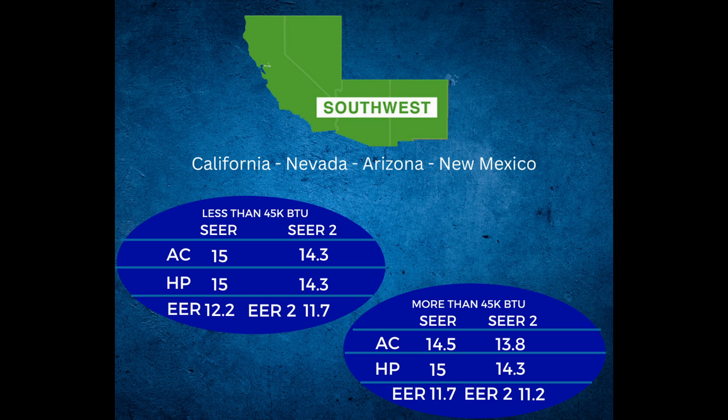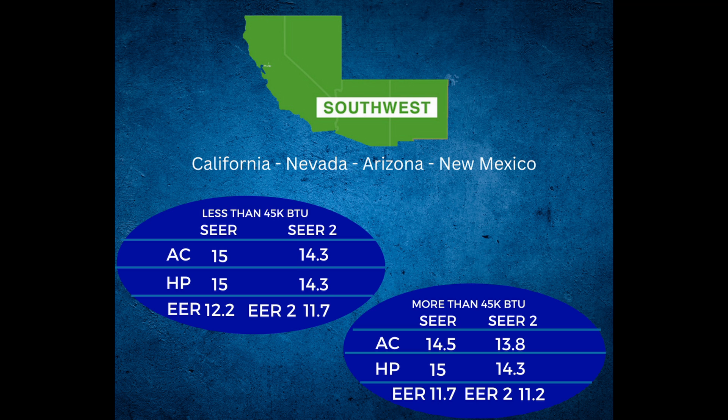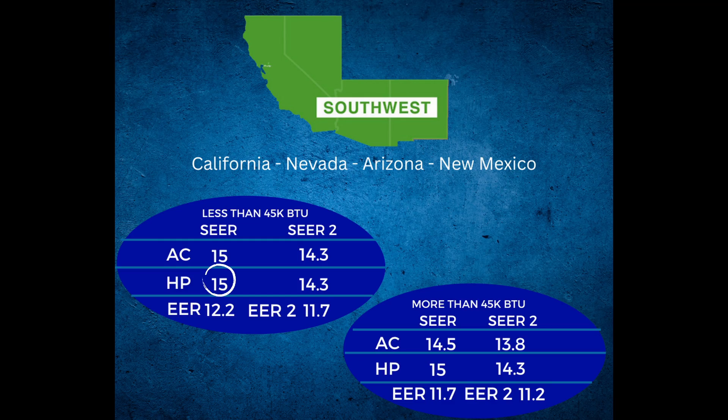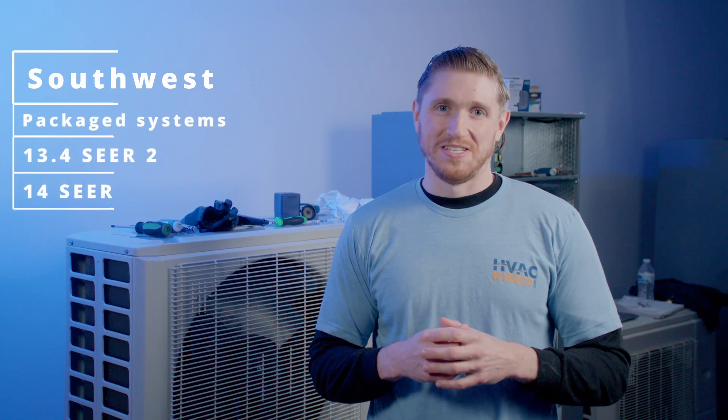That covers all you need to know for air conditioners in the southwest. Luckily, for heat pumps it gets a little simpler — all we're looking at is SEER or SEER 2. With heat pumps, we also do not need to look at the BTU requirements in the southwest region. For heat pumps, the SEER 2 minimum is 14.3 for all heat pumps manufactured January 1st or later. Old heat pumps made in 2022 that are 14 SEER do get grandfathered in. For equipment made on January 1st or later, the SEER rating bumps up to 15. So if your heat pump was made before 2023, it can be 14 SEER; if made on or after January 1st, it has to be 15 SEER or 14.3 SEER 2. And for all package systems, the rating is 13.4 SEER 2 or 14 SEER.